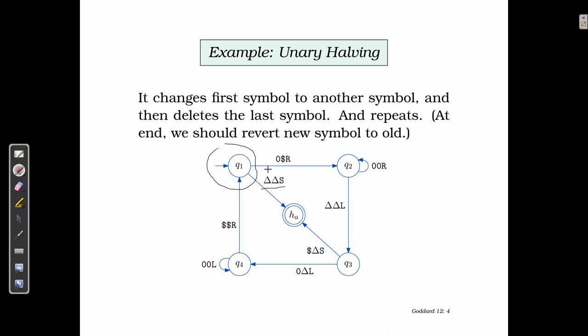In case of the Delta, it will write a Delta and then stay, and in this case it will go to the accept state. However, if that is not the case, then it can see the Delta and write down another symbol, which is the dollar sign.